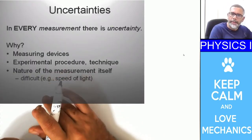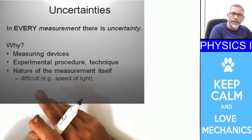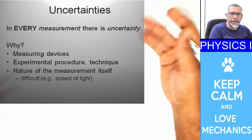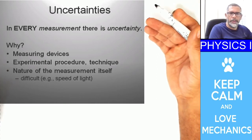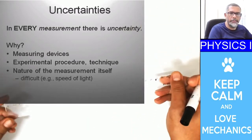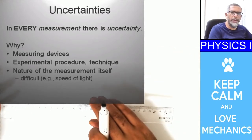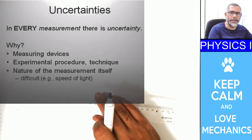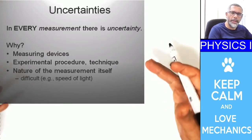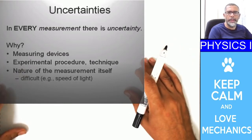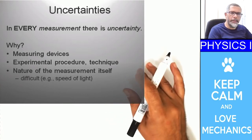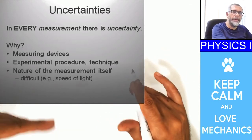In every measurement there is uncertainty, and there are many different reasons for this. One reason might be your measuring device — there is no perfect measurement device. You might measure something with a ruler, a very simple basic device, or you might measure the length of something with a laser, which is more precise. But even for very technologically advanced measuring devices, there is still some kind of uncertainty. We can make the uncertainty as small as possible by advancing our technology.